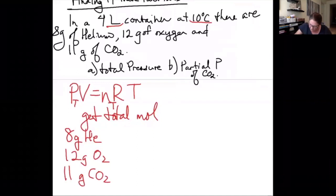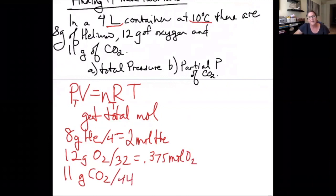So getting moles of each, helium has a molecular weight of 4. That gives us 2 moles of helium. O2 is 32 and 12 divided by 32 gives us 0.375 moles of O2. CO2 has a molecular weight of 44 and 11 divided by 44 is 0.25 moles of CO2.